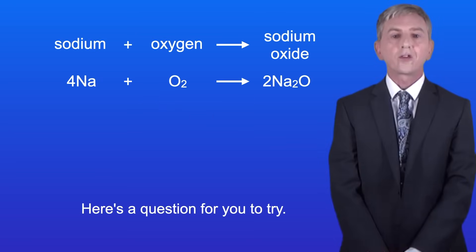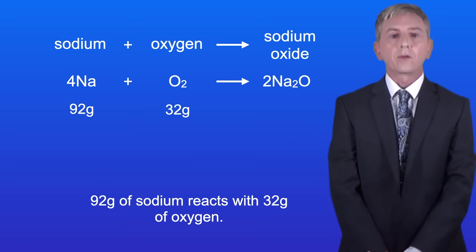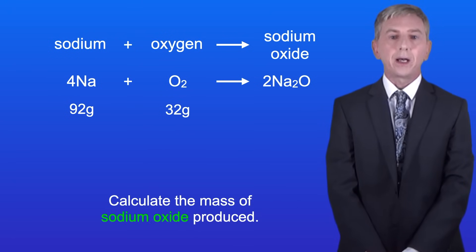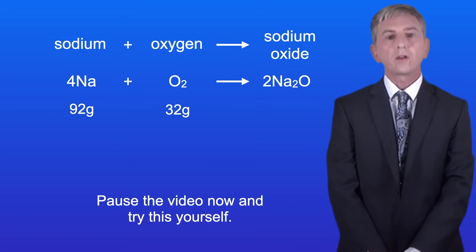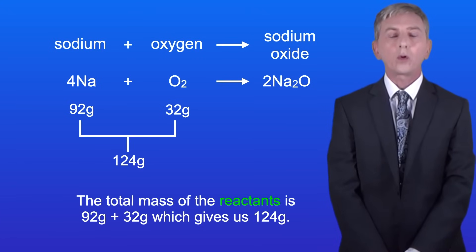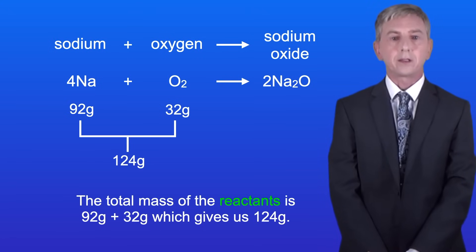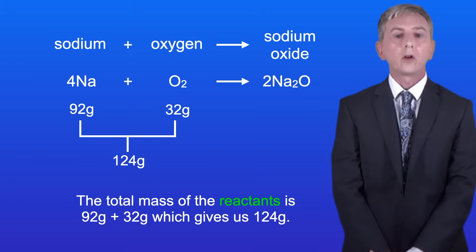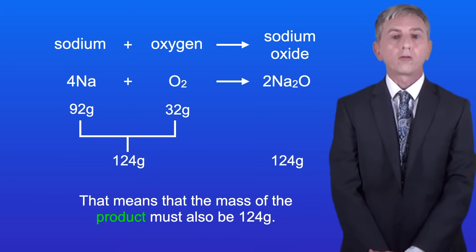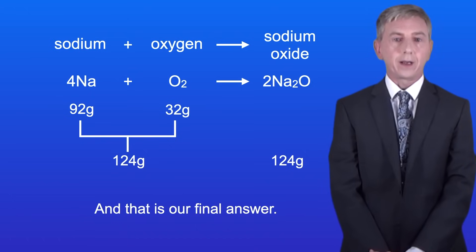Here's a question for you to try. 92 grams of sodium reacts with 32 grams of oxygen. Calculate the mass of sodium oxide produced. Pause the video now and try this yourself. The total mass of the reactants is 92 grams plus 32 grams which gives us 124 grams. That means that the mass of the products must also be 124 grams, and that's our final answer.